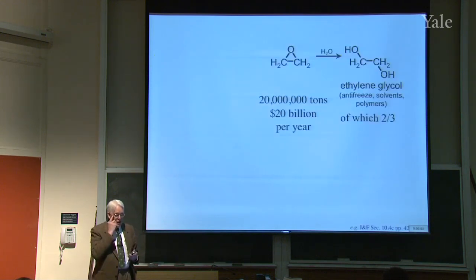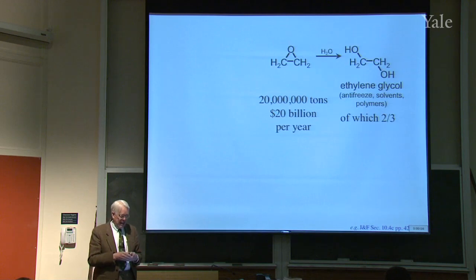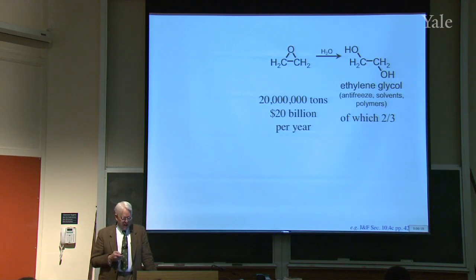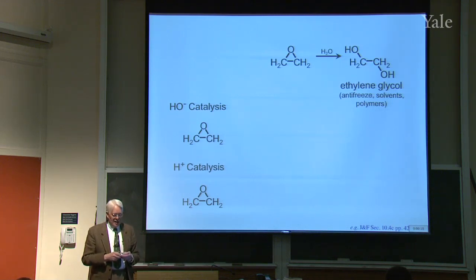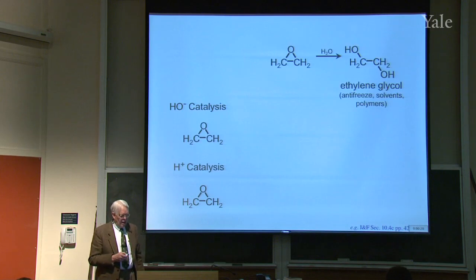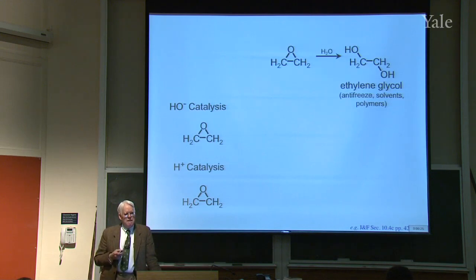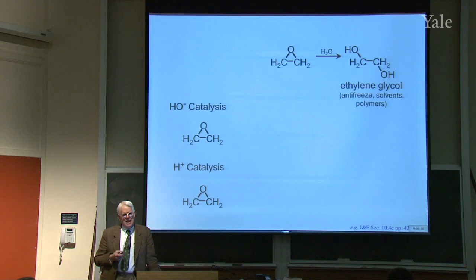At the very end last time, we were talking about ethylene oxide — how it was a big item of commerce, 20 million tons a year and $20 billion because of the importance of ethylene glycol. We were going to see how you get ethylene glycol from either base or acid catalysis with water on ethylene oxide. Starting with base catalysis — where will OH⁻ attack ethylene oxide? A student suggests it will attack on the hydrogen, CH.